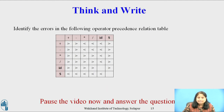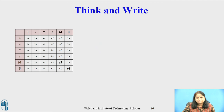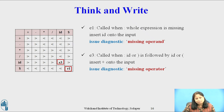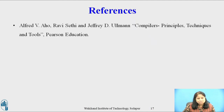So, till now we have considered error recovery in operator precedence parsing. Now pause this video and reflect on this question for a minute or two and write your response. The question is: identify the errors in the following operator precedence relation table. I hope all of you have completed this activity. E1 is called when the whole expression is missing — insert ID onto the input and issue 'missing operand'. E3 is called when an ID or right parenthesis is followed by an ID or left parenthesis — there is no operator — so insert plus onto the input and issue 'missing operator'. Thank you.